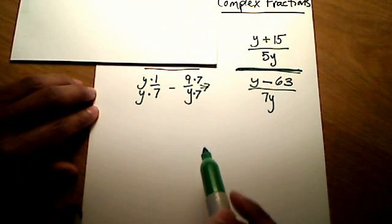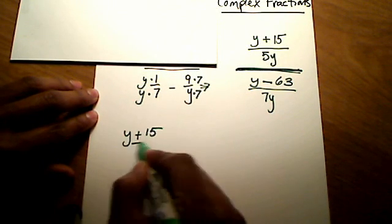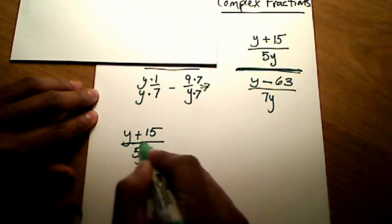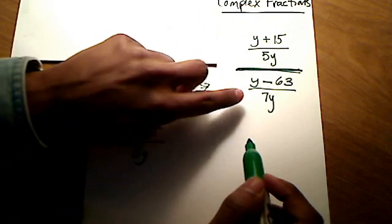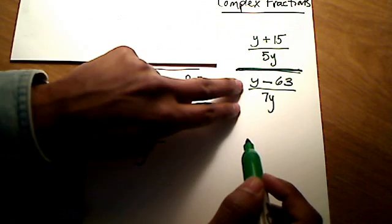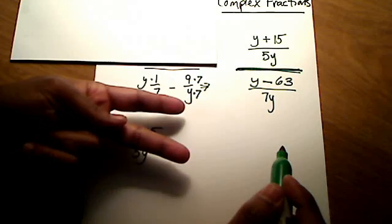And if I want, I can rewrite those two. I can rewrite them as y plus 15 all over 5y divided by this denominator here. But instead of saying divided by and then writing this, why don't I just change it straight to multiplication and flip that bottom fraction.